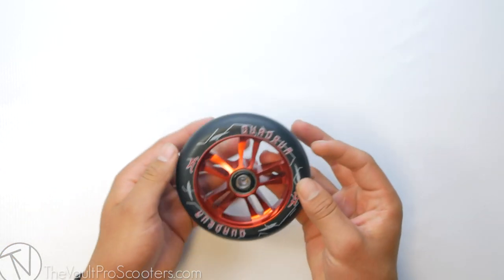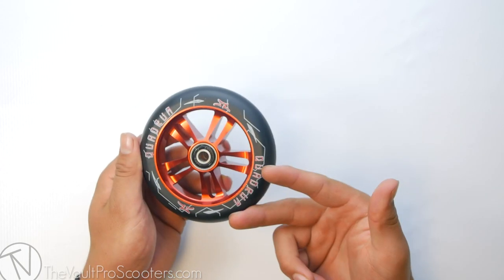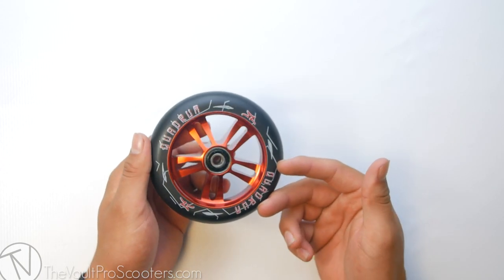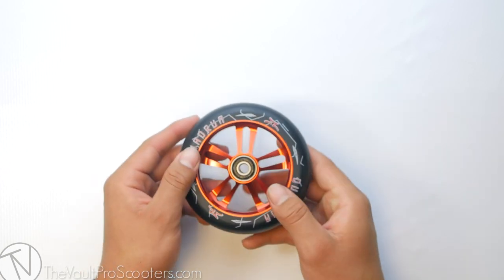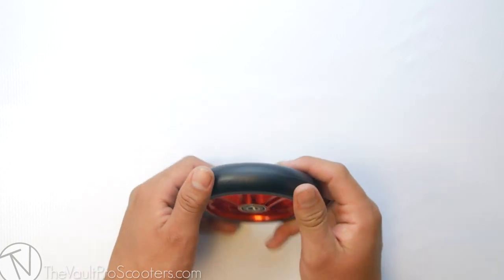And yeah guys, that's the AO Quadram wheel. Make sure to put a quantity of two in your cart if you're planning to purchase these. Don't worry about the bearings—you'll be rolling really nice and smooth on these Titan bearings. And yeah guys, make sure to stay tuned for more product demos.